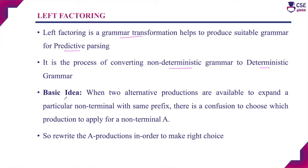The basic idea is: when more than one alternative production is available to expand for a non-terminal with the same prefix, the parser will get confused about which production to apply for the non-terminal in order to derive the correct input string. To avoid this confusion, the parser implements the left factoring concept to factor out the common prefixes used in the productions.